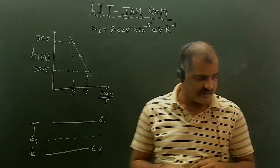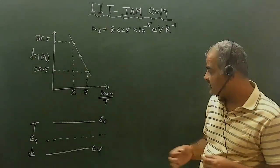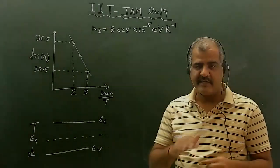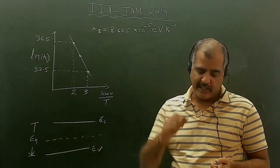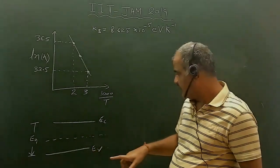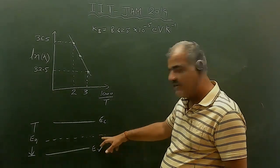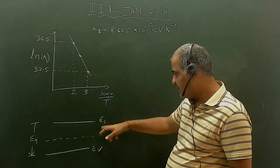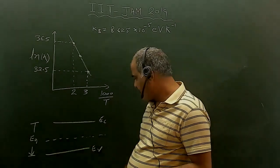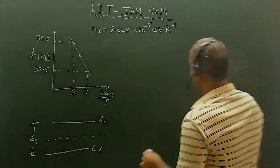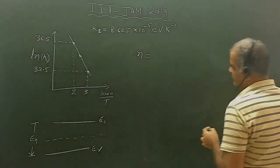We know the carrier concentration in semiconductors is temperature dependent. In the case of an intrinsic semiconductor, when you increase the temperature, bonds get broken and electrons go from the valence band to the conduction band. For an intrinsic semiconductor, the Fermi level lies exactly midway in the band gap. For n-type, the Fermi level is close to the conduction band, and for p-type, it is close to the valence band.